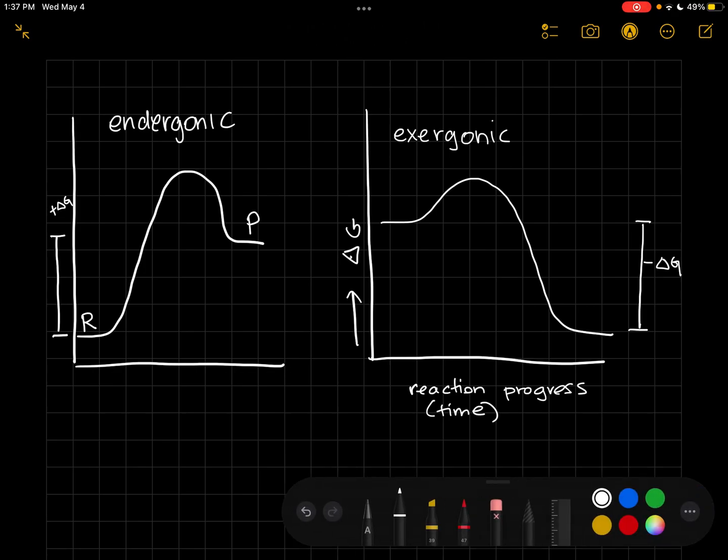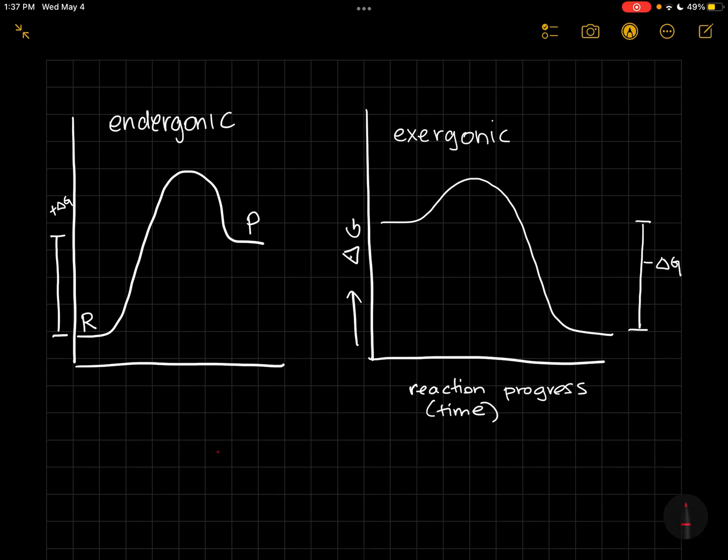Another thing that you want to know about these diagrams is the energy of activation. And the energy of activation is going to be the delta G between the reactants and the highest part of the reaction. So this is delta G of activation. So that's how much energy you need to put in to make this reaction start to go forward. So that's for this one here. It's just this amount. This one's a lot smaller.